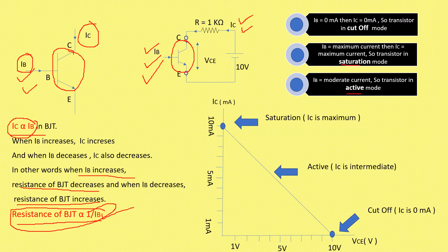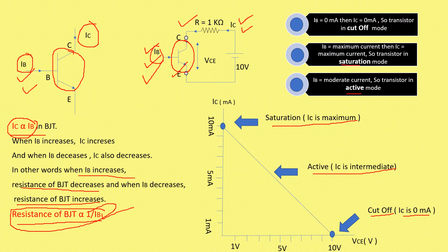Now see the graph. In the graph, cutoff is the point when IC is zero, saturation is when IC is maximum, and active is when IC is intermediate. So whatever we saw earlier — in the first slide we were connecting resistance between A and B manually. Here we are connecting BJT and its resistance is varied with the help of IB. This circuit works similarly. The points shown — the cutoff point, the saturation point, and the active point — are known as operating points, and the line shown is known as the DC load line.